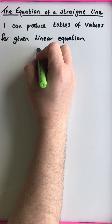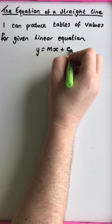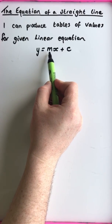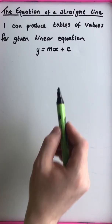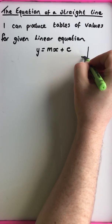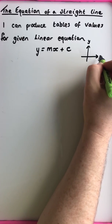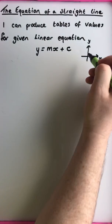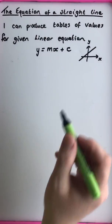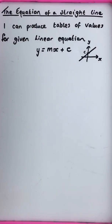Every linear equation that we're going to deal with in straight line is going to take this form, where m represents the gradient — which you've seen already from the previous videos — and c represents the intersection of the line with the y-axis. So we'll have our horizontal with x, our vertical with y, our gradient tells us the steepness of the line, and our y-intersection is where the line crosses the y-axis.